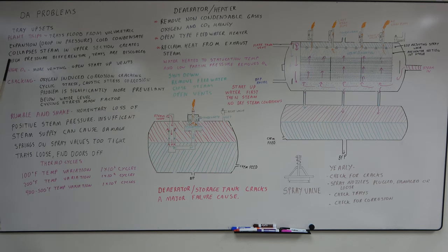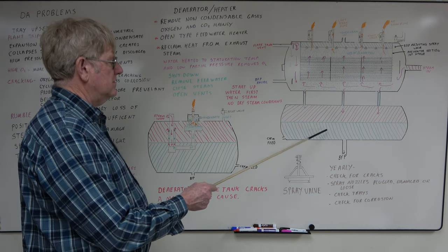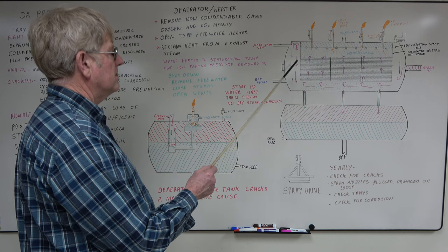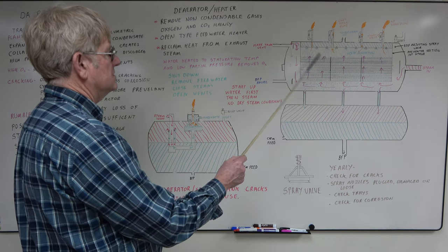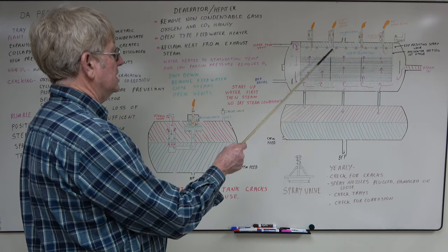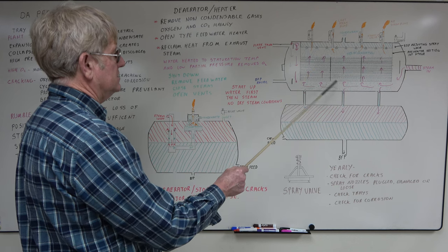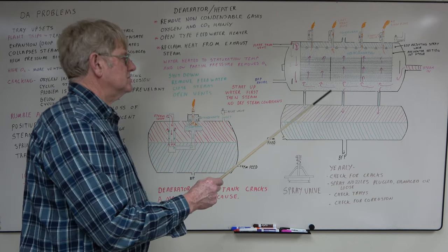Deaerator problems. You have tray upsets, plant trips, trays flood from volumetric expansion. It's caused from a drop in the steam pressure. Cold condensate collapses steam in the upper section, creates high pressure differential. The trays are dislodged. You have a lot of energy in this water, especially if it's running 70 psi. You drop the pressure real quick, this is going to start expanding. And then you spray cold water in here, this collapses, and I have all this energy shooting up. I've read where you can have like 30,000 pounds per square inch force. So basically, it'll knock the trays out of alignment, quite a bit of damage to your deaerator.